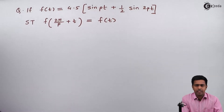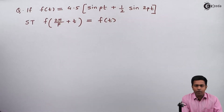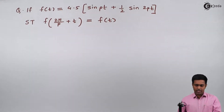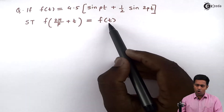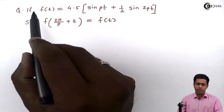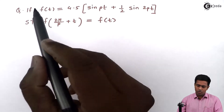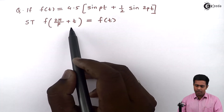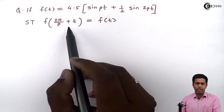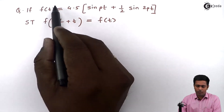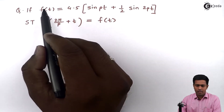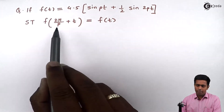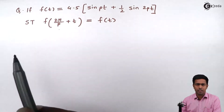To prove this result we will first find out the left hand side, because the right hand side is f of t which is already given in the question. So to find the value of the left hand side we will replace t in f of t by 2π/p plus t.